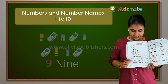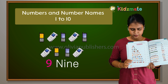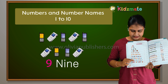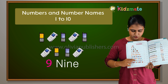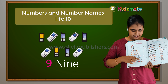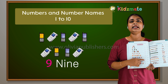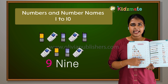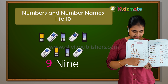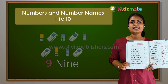Then 9. What is this? It is a mobile phone. Now 1, 2, 3, 4, 5, 6, 7, 8, 9. How many? 9. N-I-N-E, 9.